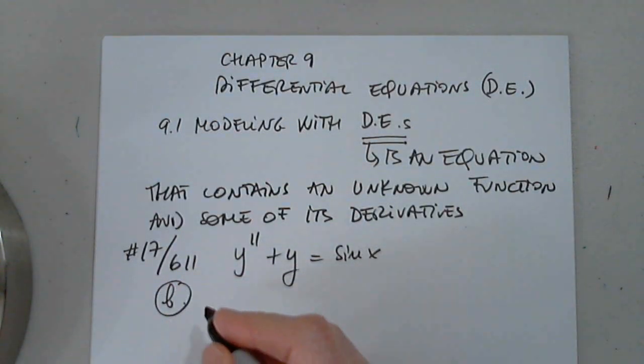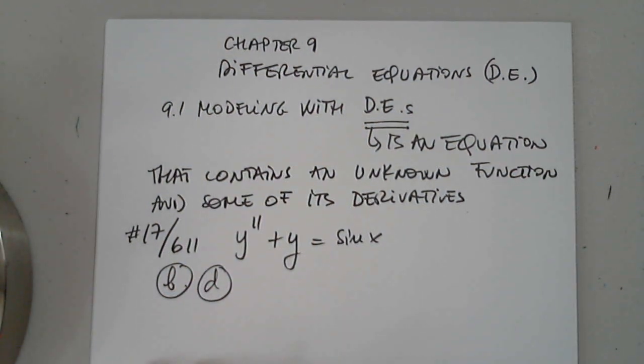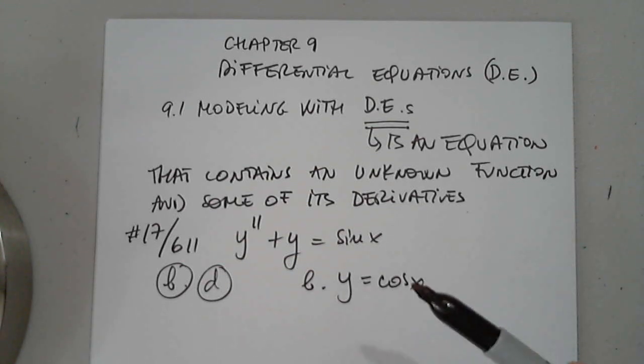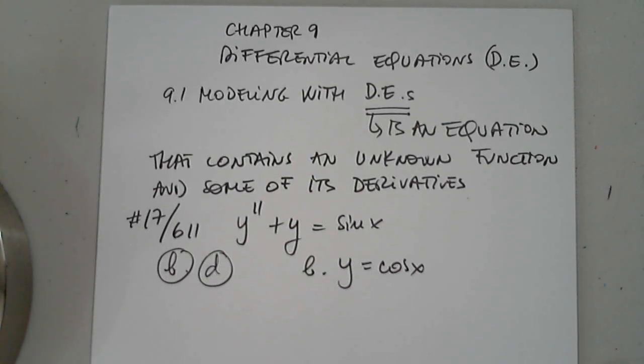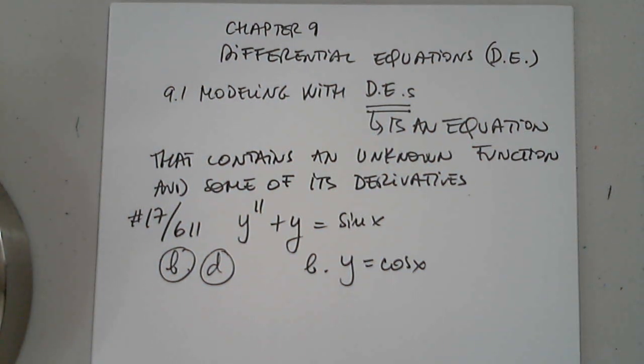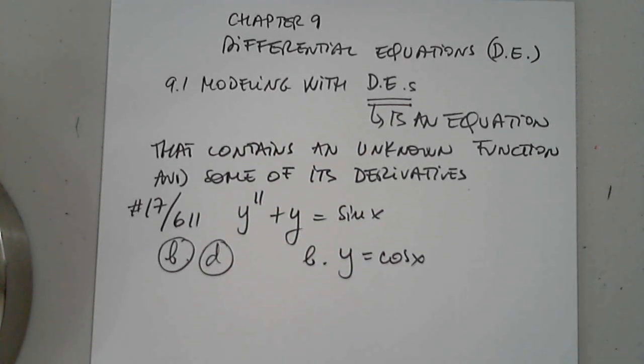And they're giving us four options. I'm just going to look at option B and option D. Option B, they're giving us for B, y equals cosine x. They're only asking us now to show whether this is a solution of this differential equation. Later on in this chapter we will learn how to solve simple differential equations. And I'll mention then a method of separable differential equations. That's for later.